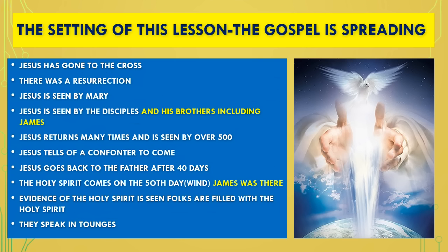The setting of this lesson: the gospel was spreading, Jesus had gone to the cross, there was a resurrection, and he was seen by Mary, the disciples, his brother James, and as many as 500 people. He promised the Holy Spirit, saying he would not leave us comfortless. Forty days after the resurrection, he ascended to heaven. On the 50th day, with James, the disciples, and Mary in the upper room, the Holy Spirit came. People were filled with the Spirit and began to speak in tongues — speaking in Aramaic, Greek, Latin, and other languages — so that the gospel could go forth to all people.